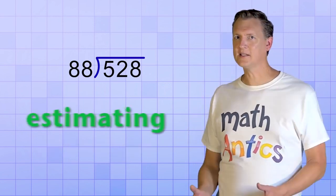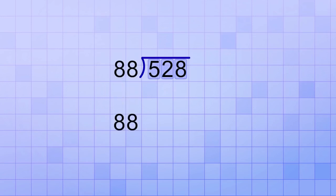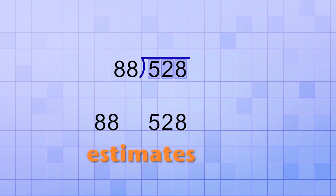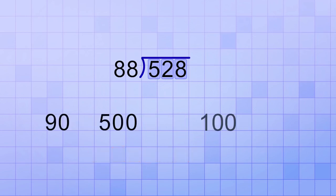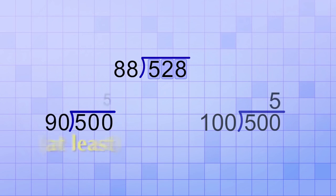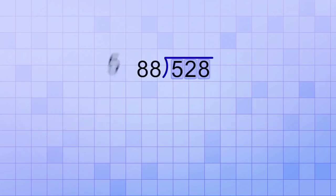Well, a little estimating will help us make much better guesses at our answer. The numbers 88 and 528 are kind of hard to work with, but if we made estimates of those numbers, like if we changed them to 90 and 500, that would make it easier to estimate the answer. Since 100 would divide into 500 exactly 5 times, that means that 90 will divide into 500 at least that many times. So, let's make 5 our first estimate for the answer.